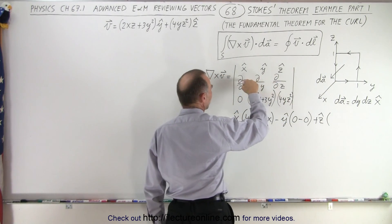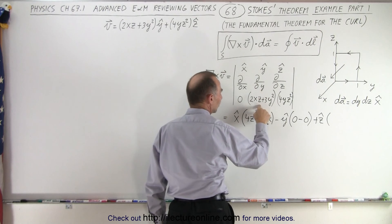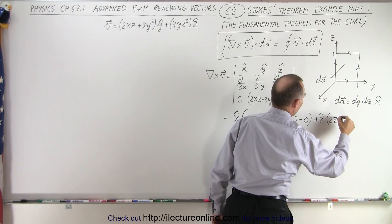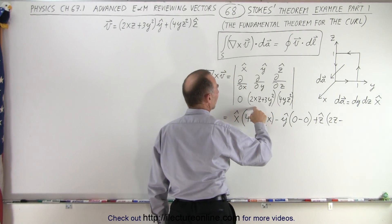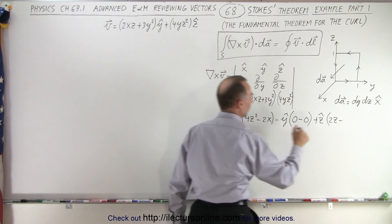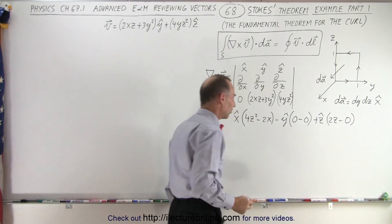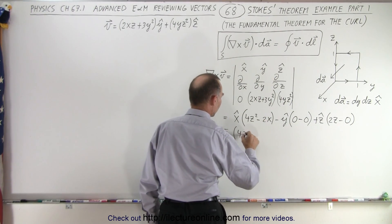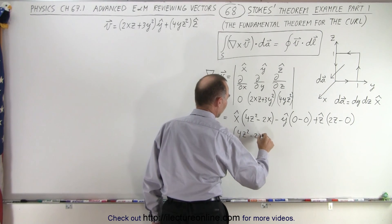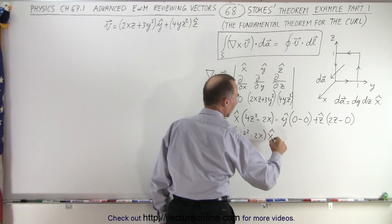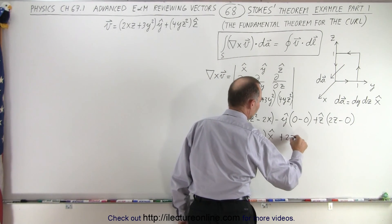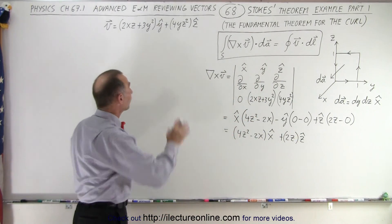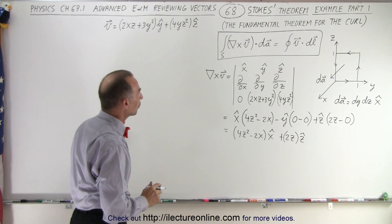The z component is times the partial derivative with respect to x, which is going to be 2z, minus the partial derivative with respect to y of 0, which is 0. So the only terms that remain give us: the curl equals (4z² − 2x) in the x direction plus 2z in the z direction. That is the curl of our vector.